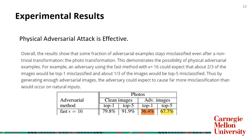The third finding is that physical adversarial attack is effective. About two-thirds of images would be top-1 misclassified and about one-third would be top-5 misclassified. Thus, by generating enough adversarial images, the adversary could expect to cause far more misclassification than would occur on natural inputs, showing that physical adversarial attack is effective.